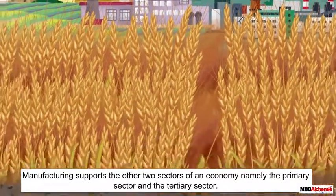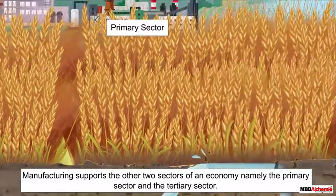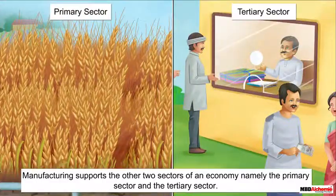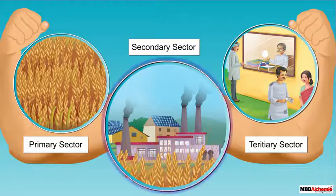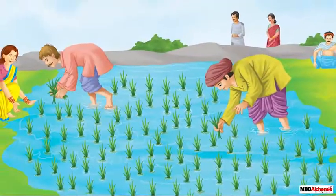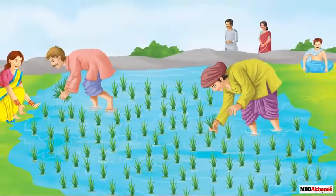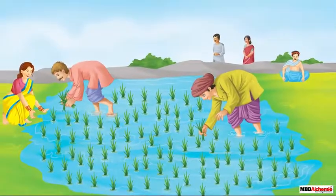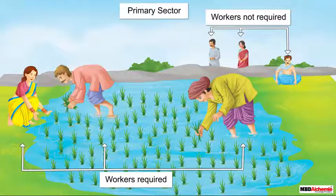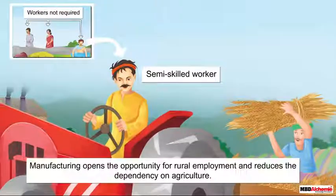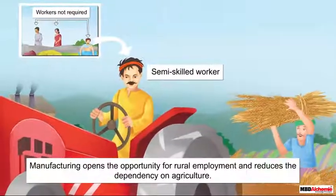Manufacturing supports the other two sectors of an economy — namely the primary sector and the tertiary sector. Thus, manufacturing industries play a key role in strengthening a country's economy. The manufacturing sector also reduces dependency on agriculture.